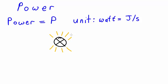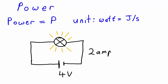To investigate power in circuits, let's look at a circuit. In this circuit, let's have a 4 volt battery supplying 2 amps (amp is short for ampere) of current to a light bulb.